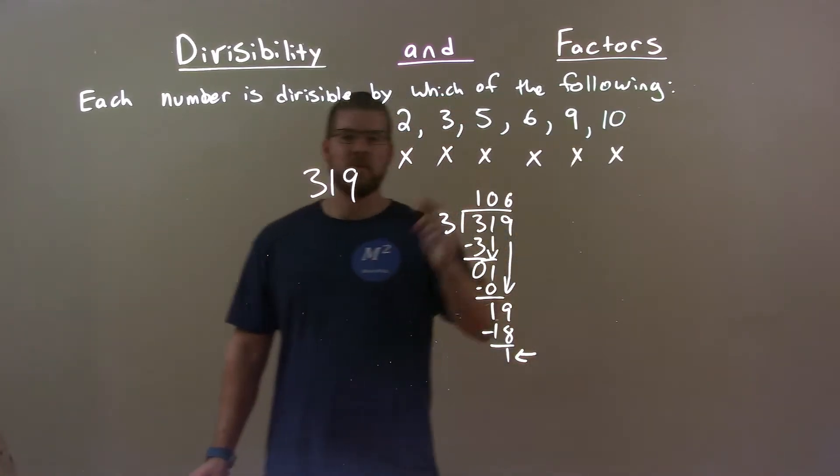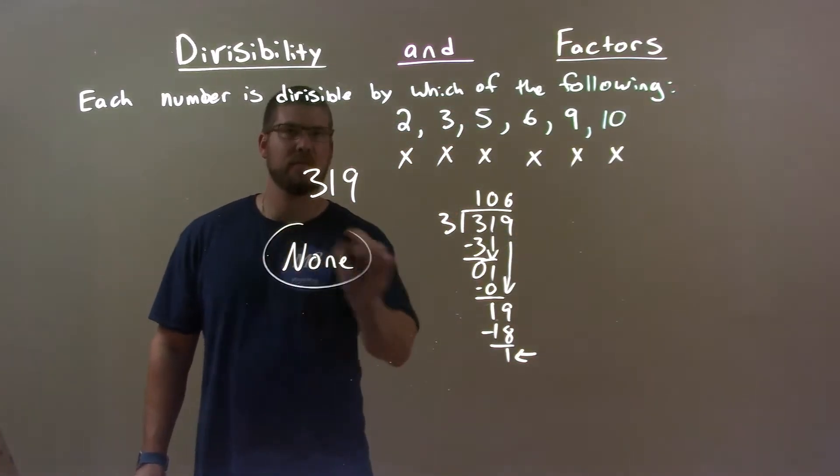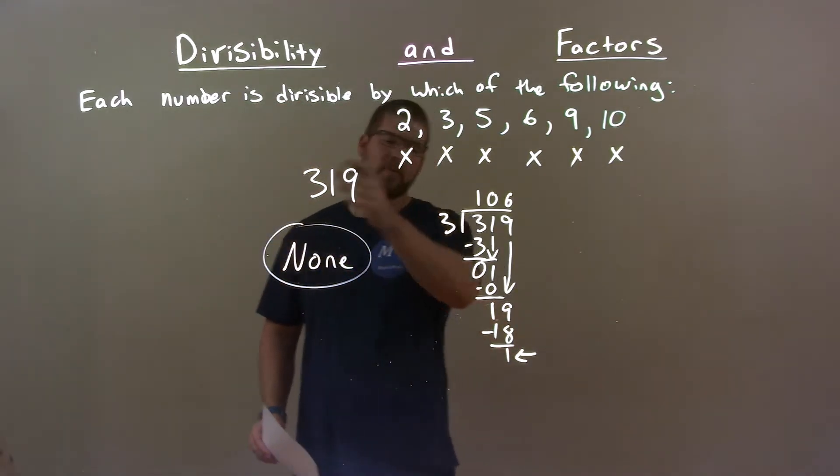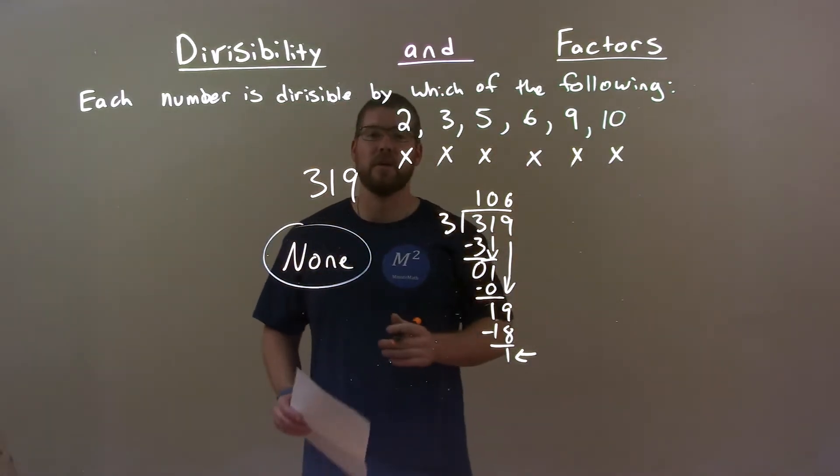So, across the board, none of these are divisible. 319 is not divisible by any one of these numbers.